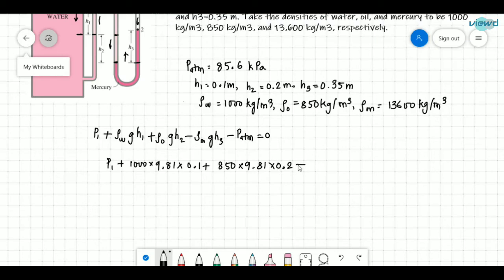And the next it is minus rho M which is 13,600 into 9.81 into H3. H3 value is 0.35 minus atmospheric pressure 85.6 kilopascals into 10 power 3 is Pascals. So 85.6 into 10 power 3 Pascals. So as these values are in Pascals, we need to represent P atmospheric pressure in Pascals only.